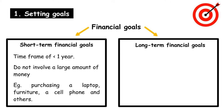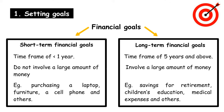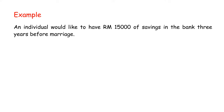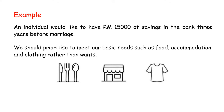Long-term financial goals usually take more than 5 years to achieve and involve a large amount of money. For example, an individual needs to have savings for retirement, children's education, medical expenses, and others. We should prioritize meeting our basic needs, such as food, accommodation, and clothing, rather than wants.